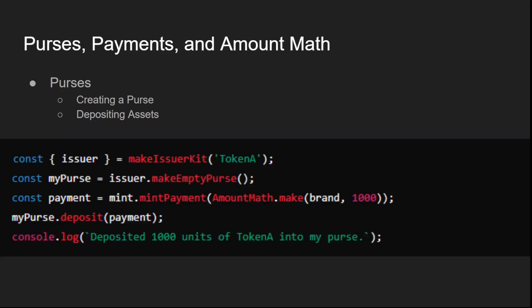To effectively manage digital assets in the Agoric ecosystem, it's important to understand how purses, payments, and amount math work together. These concepts are crucial for constructing secure and precise transactions. Let's explore each one.